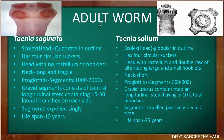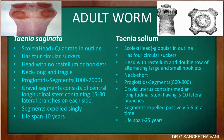The adult worm of Taenia saginata: when discussing the head, it is quadrate in outline and has four circular suckers. The head has no rostellum or hooklets. The neck is long and fragile in nature. The proglottids (segments) number 1000 to 2000, and the gravid segments have a central longitudinal stem with 15 to 30 lateral branches on each side. The segments are expelled singly and the lifespan of T. saginata is 10 years.